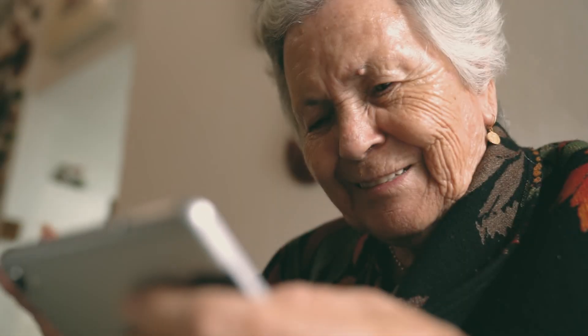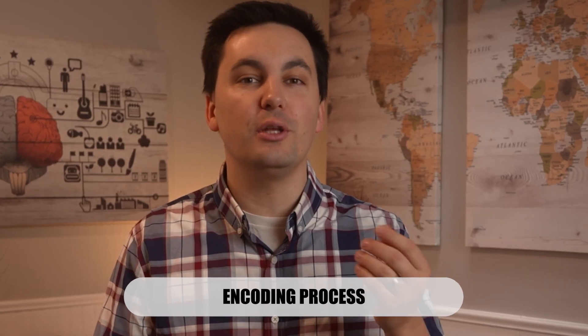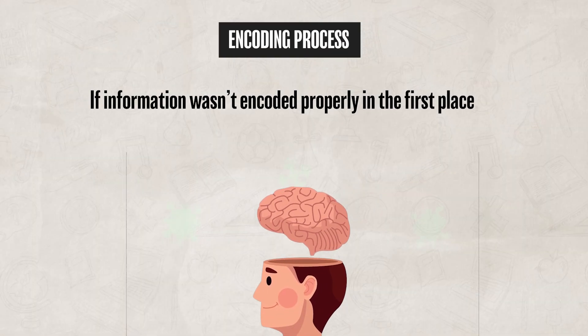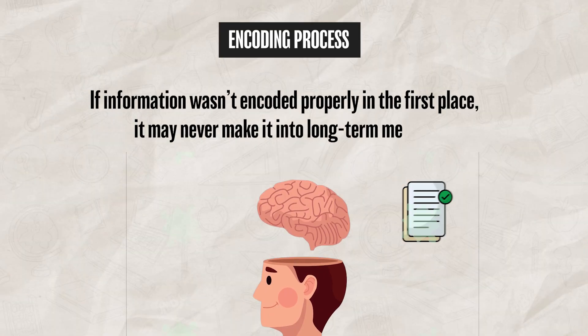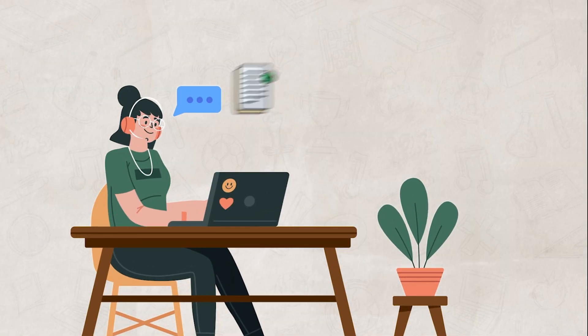It turns out that over time, our memory can fade, become distorted, and fail altogether. There is a variety of reasons for why a memory would fail or start to fade. For starters, we can look at the encoding process. If information wasn't encoded properly in the first place, it may never make it into long-term memory. Oftentimes this happens because we were not focused when trying to encode the information. When our attention is split, it becomes harder to encode the information.